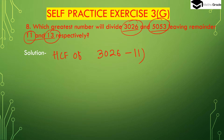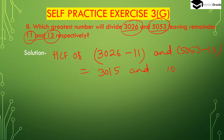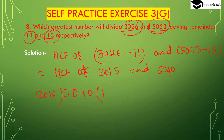The greatest number is the highest common factor of 3026 minus 11 and 5053 minus 13, that is HCF of 3015 and 5040. Using the long division method: 5040 and 3015.